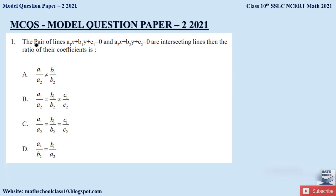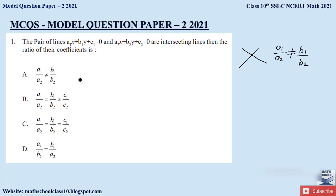The first question: the pair of lines A1x + B1y + C1 = 0 and A2x + B2y + C2 = 0 are intersecting lines. Then the ratio of their coefficients is? Whenever two lines are intersecting at a point, the ratio of their coefficients is given by A1/A2 ≠ B1/B2. So the correct option is option A.